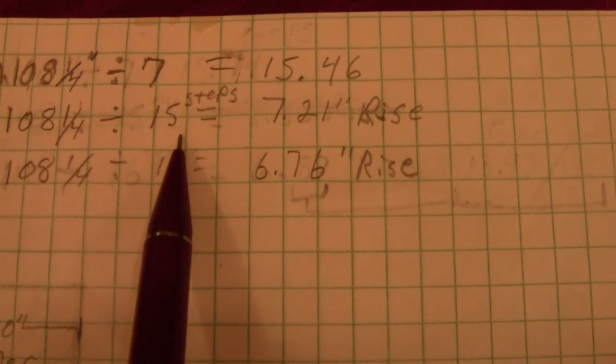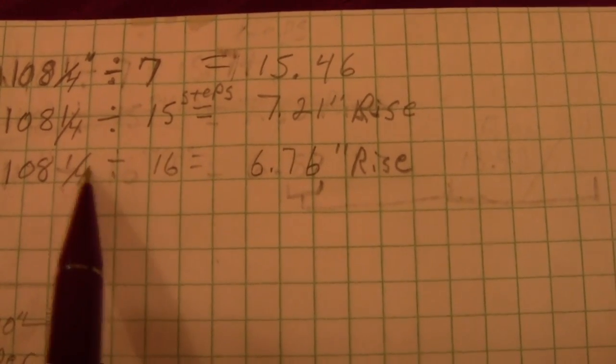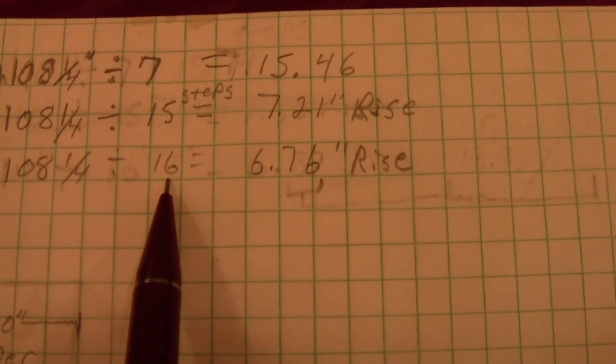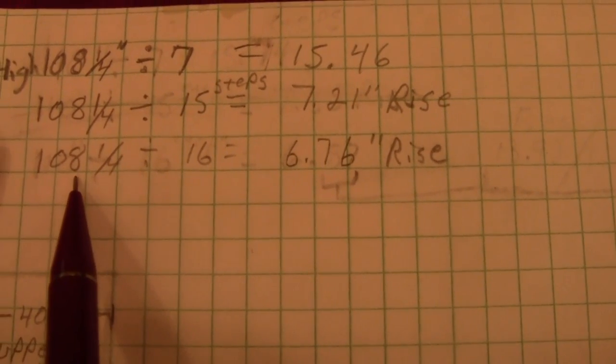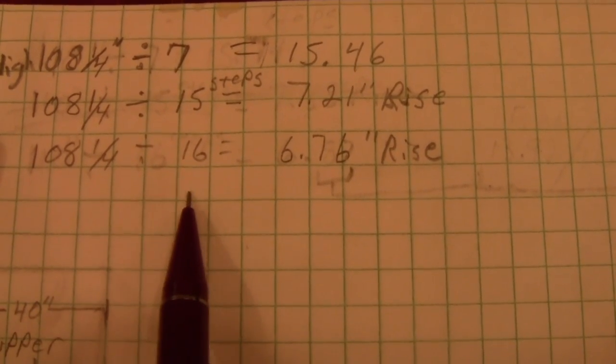But 15 is an odd number, and I'm going to do switchback stairs. So, I want to try, what would happen if I had 16 steps? So, I take 108 and a quarter and divide it by 16.